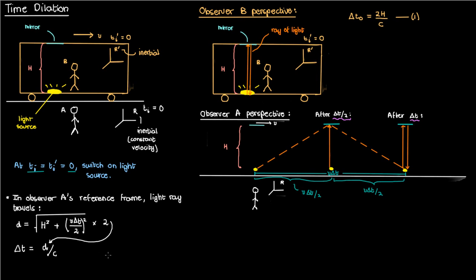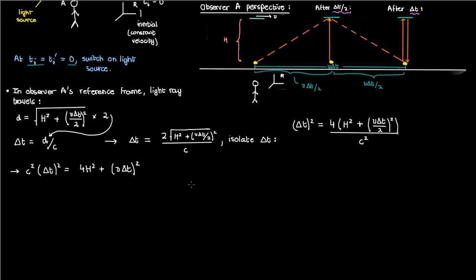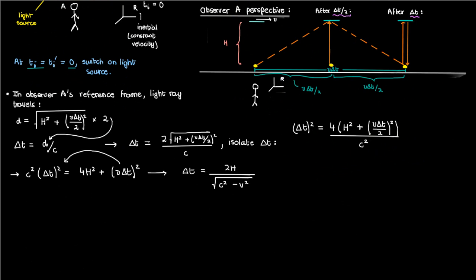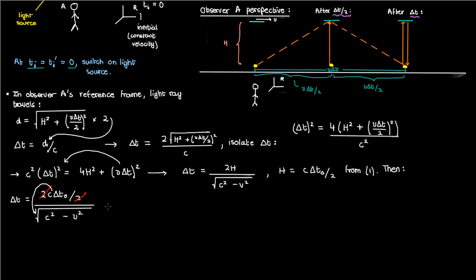Plugging in d from the earlier equation, we isolate delta_t: square both sides, multiply out c², take the v*delta_t/2 term to the left, isolate delta_t², then take the square root. Using Equation 1 and substituting h = c*delta_t0/2, the 2s cancel and we get delta_t = delta_t0 / sqrt(1 - v²/c²).